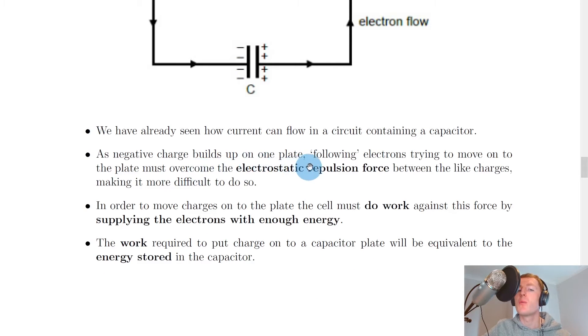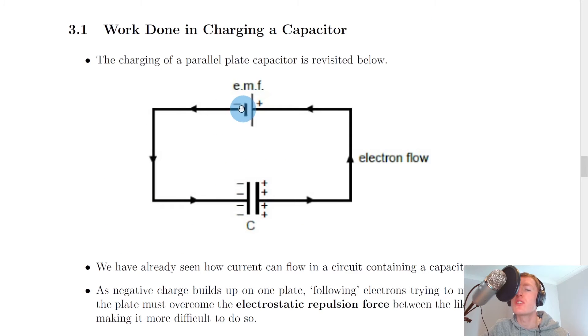As negative charge builds up on one plate, following electrons trying to move onto the plate must overcome the electrostatic repulsion force between the like charges, making it more difficult to do so. As the electrons continue to move round in an anti-clockwise direction from the negative terminal of the battery round to this plate on the left hand side, each following or successive electron will find it harder and harder to get onto that plate because of the negative charge that is already building up on that plate. Remember electrons have a negative charge, so these negatively charged electrons will be repelled away from this negatively charged plate and they'll find it harder and harder to overcome this electrostatic repulsion force to get onto this plate.